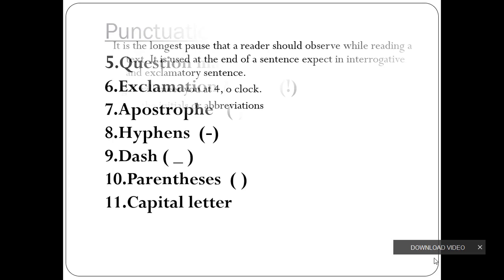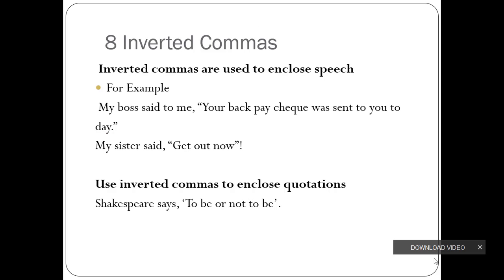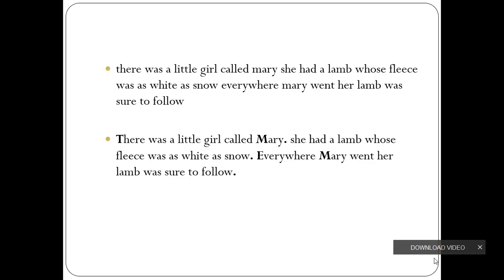Let's take an example of the text. There was a little girl called Mary. She had a lamb whose fleece was as white as snow. Everywhere Mary went, her lamb was sure to follow.